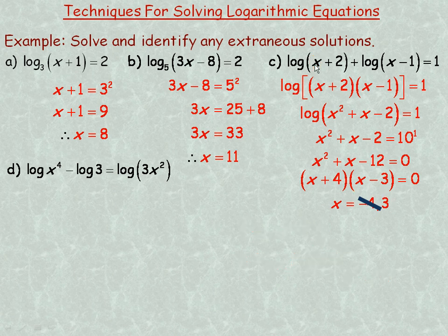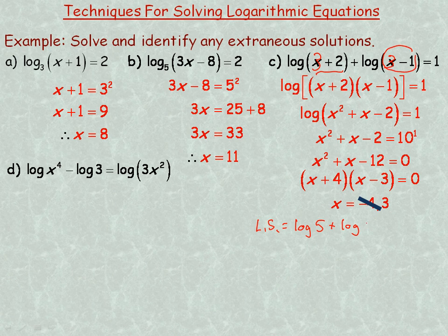The value 3 does work. On the left side, putting 3 in gives the logarithm of 3 plus 2, which is log 5, plus the logarithm of 3 minus 1, which is log 2. Using the product law, that's the logarithm of 10. Since the base is 10, log base 10 of 10 equals 1, which matches the right side.